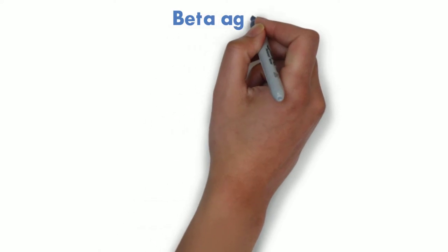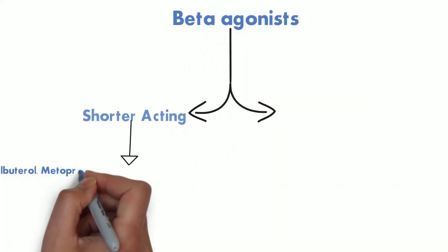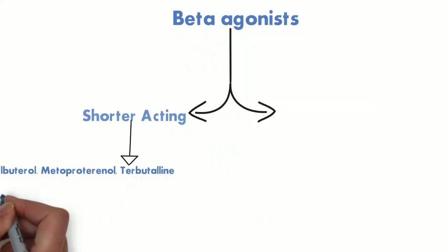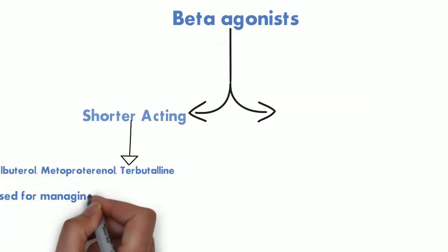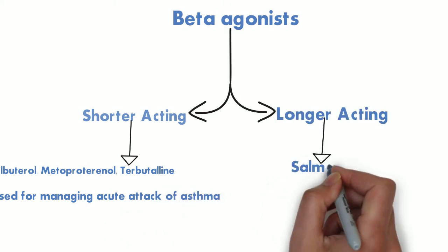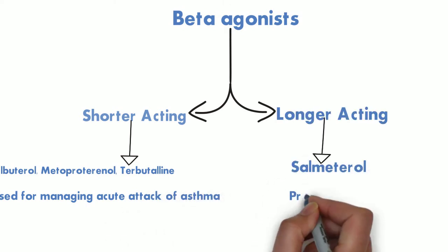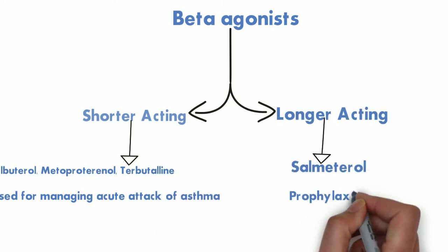Now let's cover the individual drugs quickly. First we have the beta agonists. These include short-acting drugs like albuterol and terbutaline, which are used to manage acute attacks of asthma. The longer-acting drugs include salmeterol, which is used for prophylaxis of asthma.